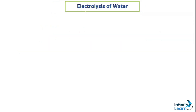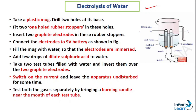Now we come to our main topic — electrolysis of water. Before understanding the definition, let's understand the experiment. Take a plastic mug and drill two holes at its base. Fit two one-hole rubber stoppers on these holes. These are your graphite electrodes fitted in the rubber stoppers. The positive terminal is the anode and the negative terminal is the cathode, and both are attached to a nine-volt battery. Fill the mug with water so the electrodes are immersed below the water level.